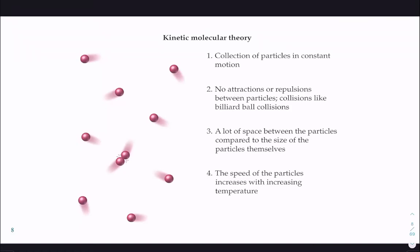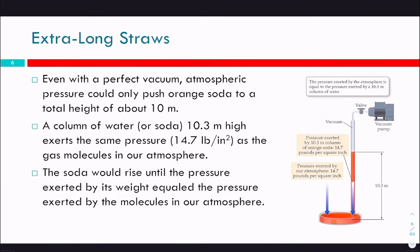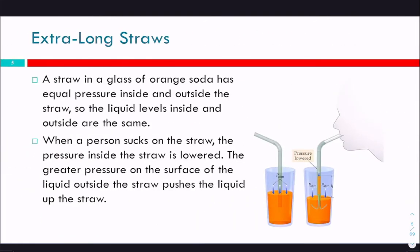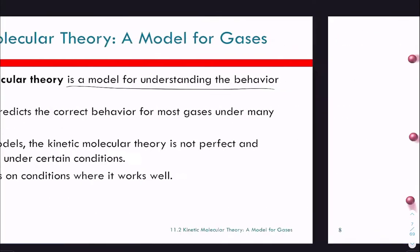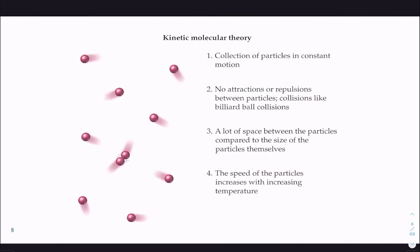We talked about kinetic molecular theory, and that's kind of where we left off. We talked about pressure, specifically with the straw: atmospheric pressure pushes down on the inside and outside of the straw. When you suck on the end of the straw, you remove some of that air pressure, so the pressure outside is greater than inside, and the liquid moves up the straw. Then we moved into kinetic molecular theory, which has these four principles.